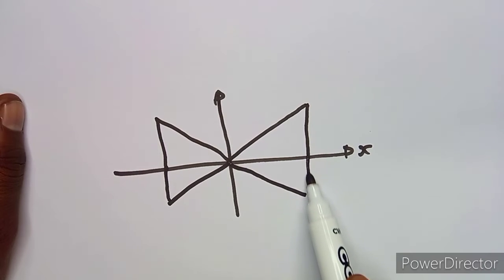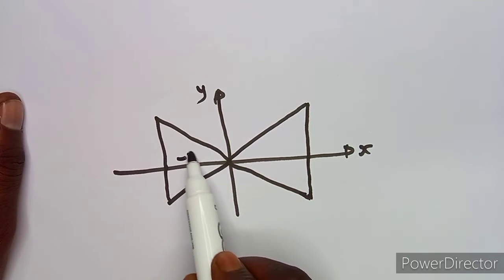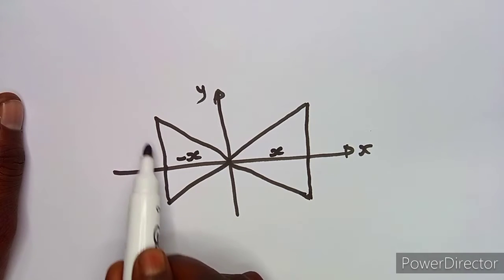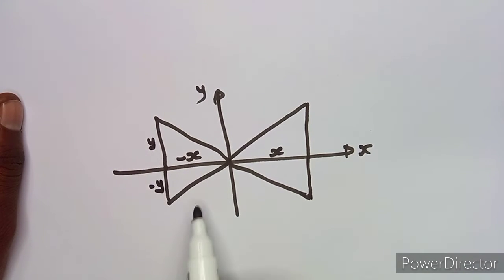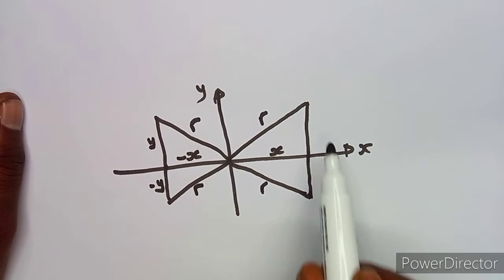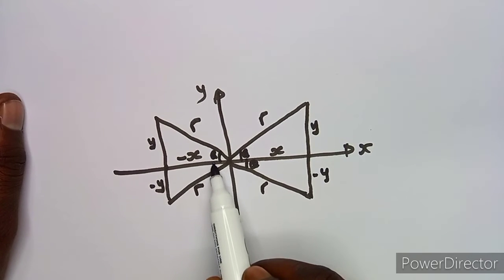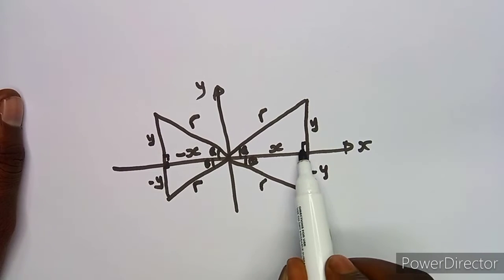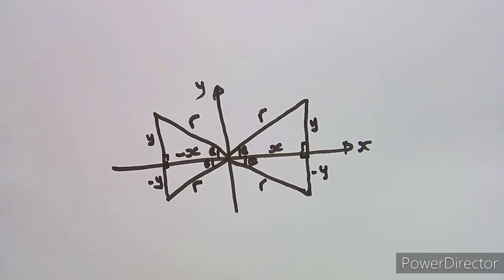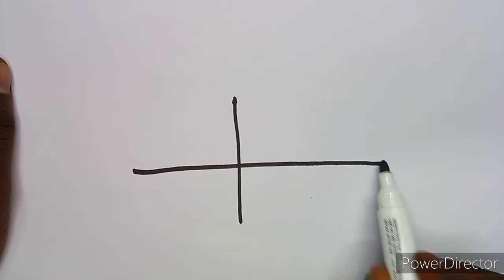We're going to understand that each and every quadrant is represented like this: negative x, positive x, positive y, and negative y. There is a resultant in each quadrant, and each quadrant has a certain angle inside — angle theta — and this would be 90 degrees. What I'm focused on in this class is knowing how to take angles and represent angles in each and every quadrant.